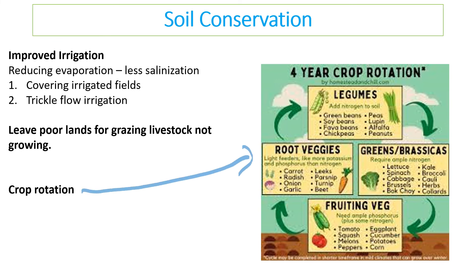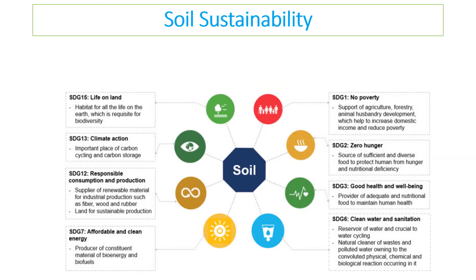Crop rotation is the idea that by growing different crops over different years, different minerals are taken from the soil so no single mineral is completely depleted. We can also grow legumes, which are nitrogen-fixing plants that use rhizobium bacteria to take nitrogen from the air and add it to the soil, increasing soil quality. Looking at a diagram, one year you might grow greens which require nitrogen, the next year a crop needing phosphorus, then one needing potassium and nitrogen, and then legumes to add nitrogen back into the soil.